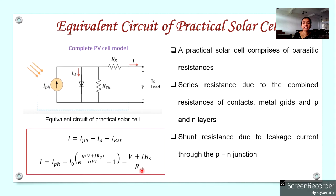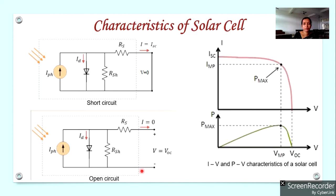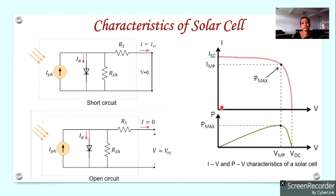Now we have to draw the characteristics of the solar cell. A solar cell has two characteristics: the current versus voltage (IV) characteristics and the power versus voltage (PV) characteristics. Both are plotted against voltage, with voltage varied from 0 to its maximum value.